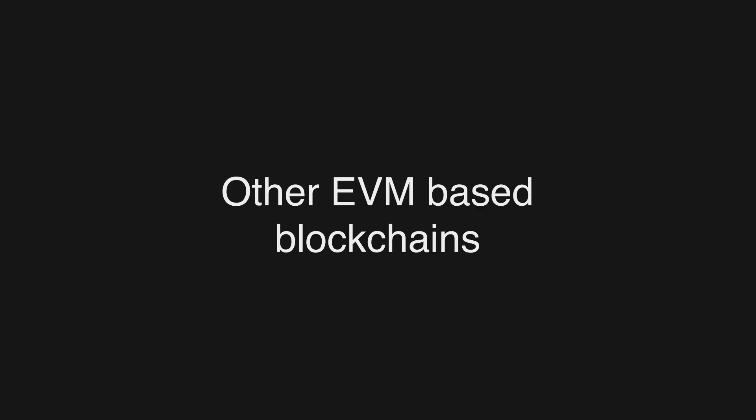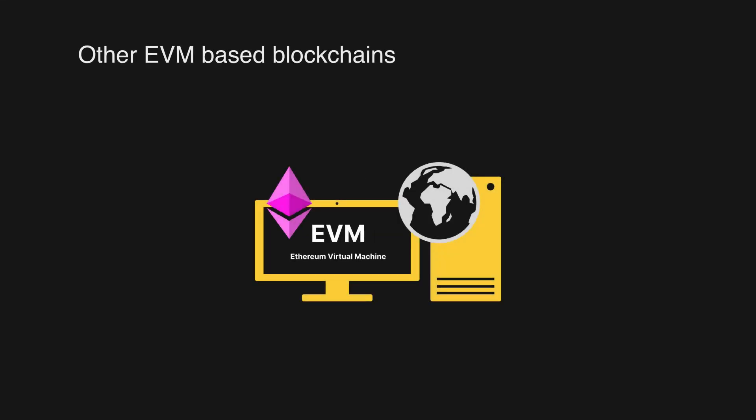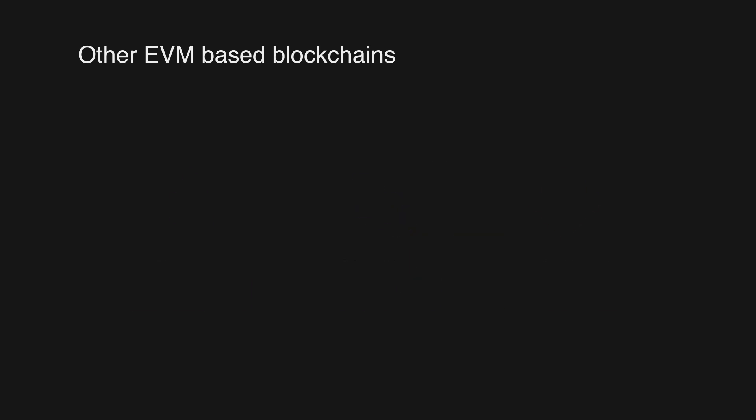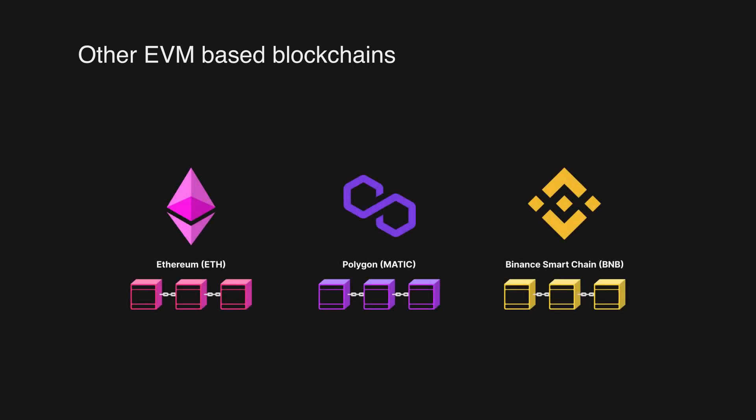Ethereum and its EVM technology has become so popular that other blockchains have implemented the technology as well — blockchains such as Polygon and Binance Smart Chain. This is very good news for developers because it means that everything we are learning in this EVM-based course can be applied to EVM-based blockchains such as these, because it's based on the same technology.